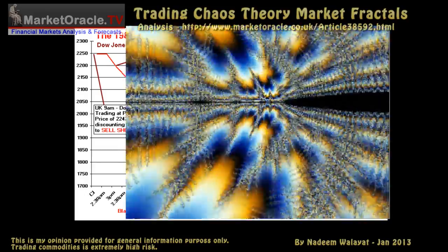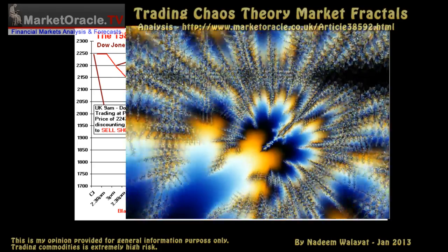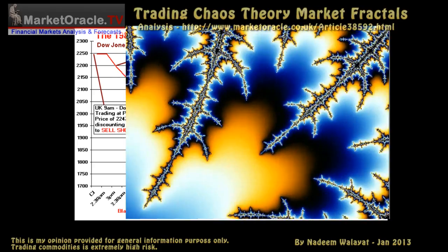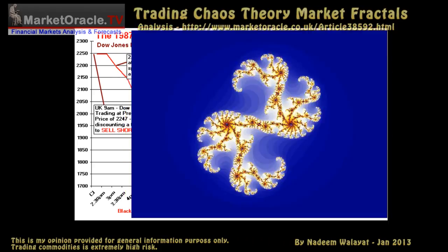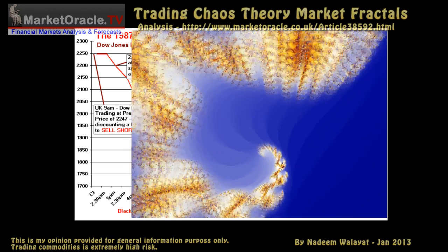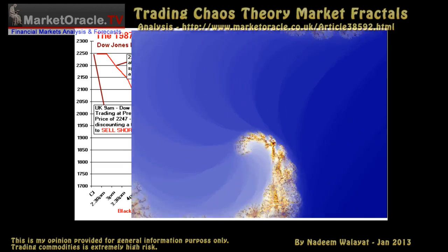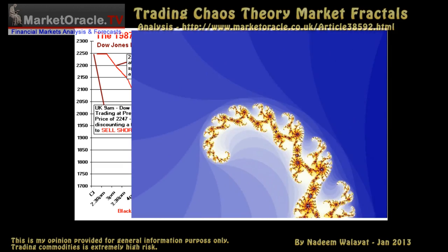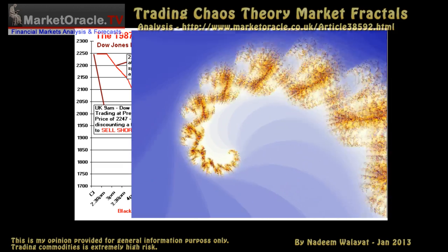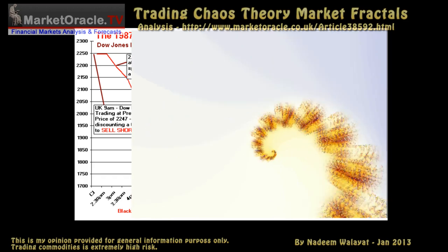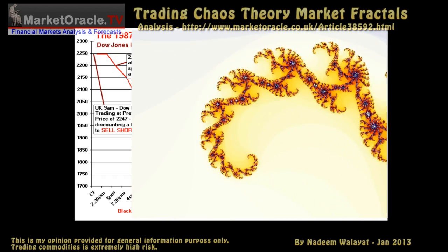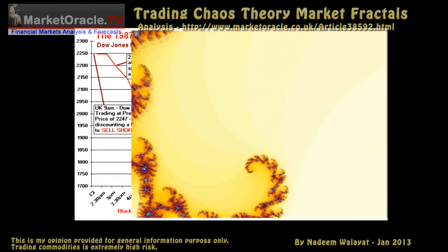In my opinion, chaos theory would have been better named fractal theory, because rather than randomness it actually implies order and structure, and that structure is found in fractals.